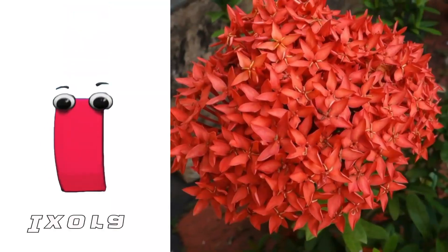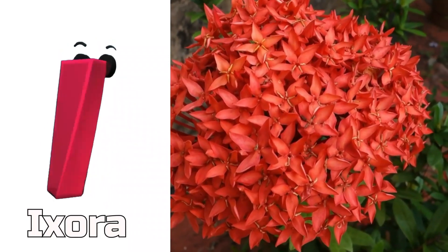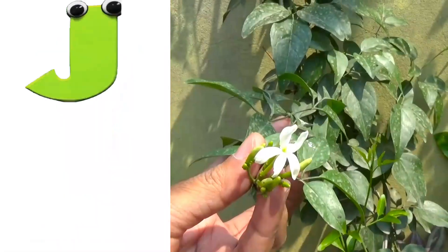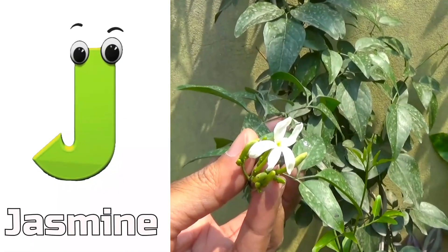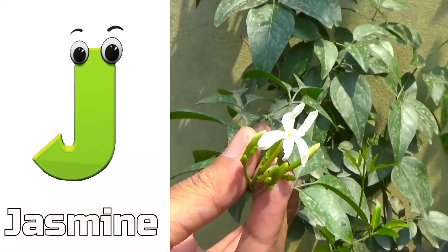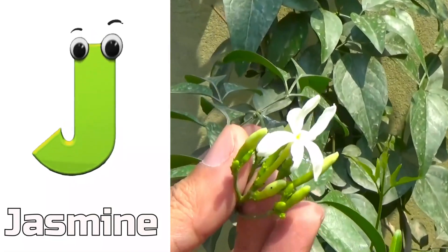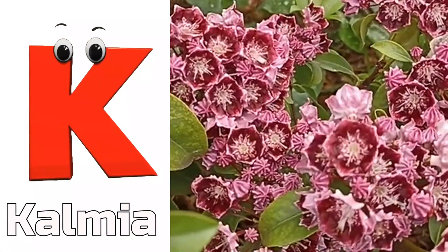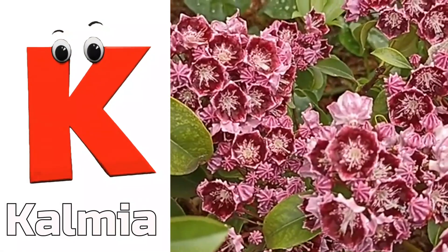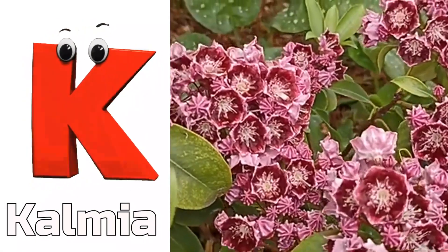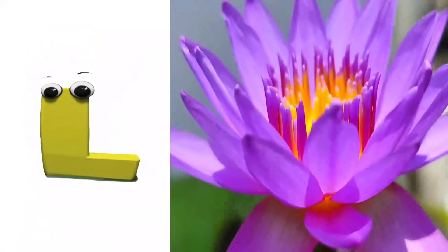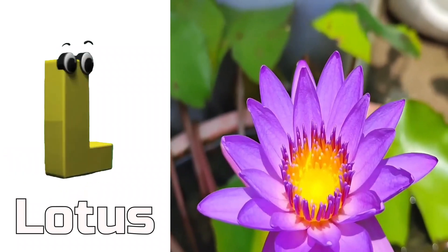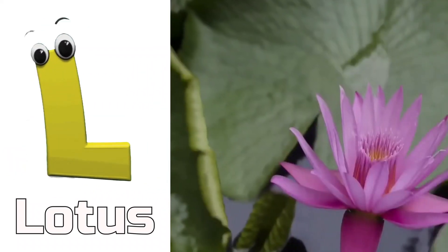I is for Exora. J is for Jasmine. K is for Kalmia. L is for Lotus.